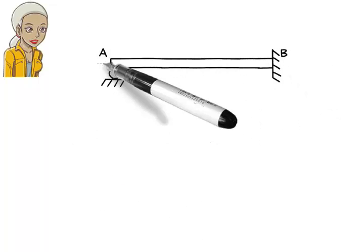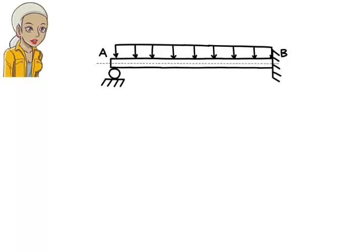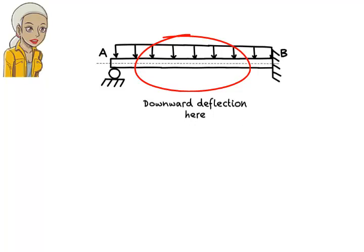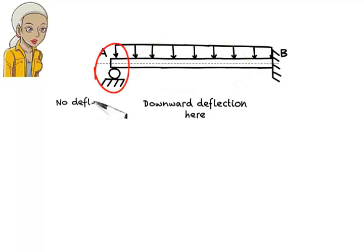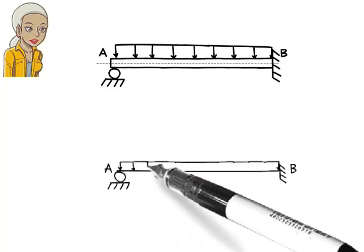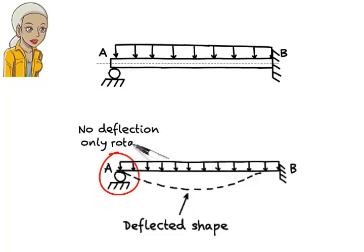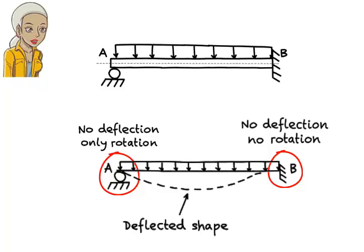Here is another example. The beam rests on a roller support at the left end and is fixed at the right end. How should we draw the deformed shape of the beam? Here is what we know: the beam has a general downward deflection away from the supports. At A the beam has no deflection, but it rotates. At B there is neither a deflection nor a rotation. Here is the deformed shape that satisfies these constraints. As you can see, the beam has a downward deflection within the segment. At the roller support, the beam has no deflection but it rotates. At the fixed support, it remains horizontal with no deflection or rotation.